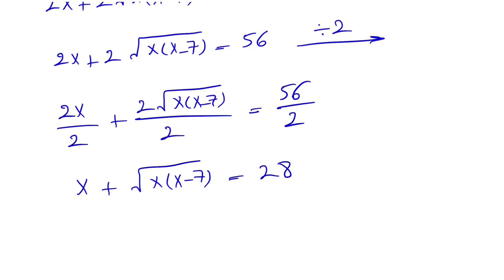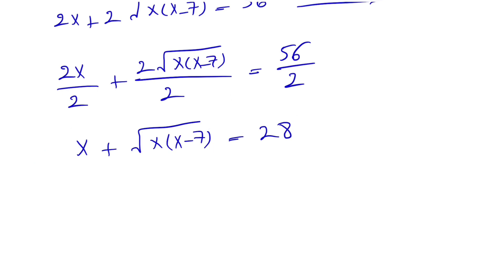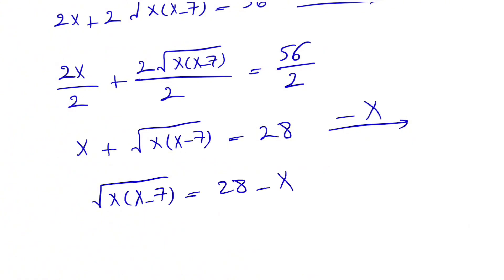Now again we have one more square root. If we square each side at this stage, we'll end up with the perfect square formula again, meaning we'll still have one square root. So it makes sense to not square both sides at this level. Instead, we're going to bring the x to the other side by subtracting x from each side. What we get on the left side is the square root of x(x minus 7), and on the other side we'll have 28 minus x.